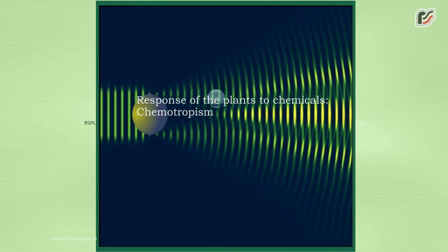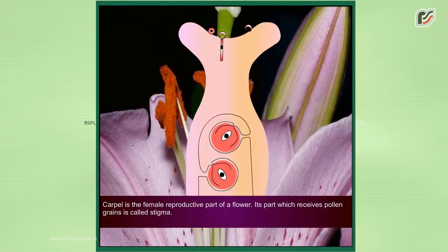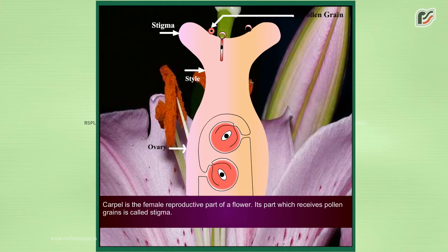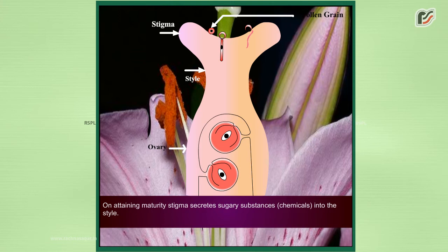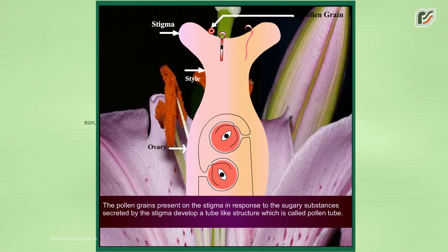The response of plants to chemicals is called chemotropism. The carpel is the female reproductive part of a flower. The part which receives pollen grains is called the stigma. On attaining maturity, the stigma secretes sugary substances or chemicals into the style.